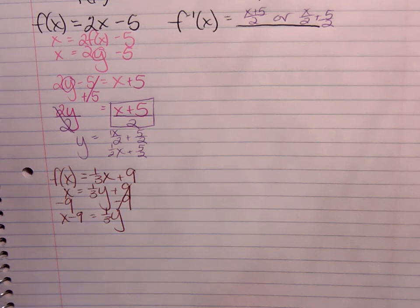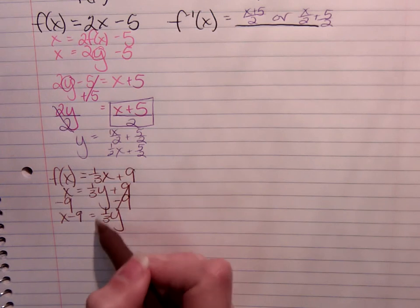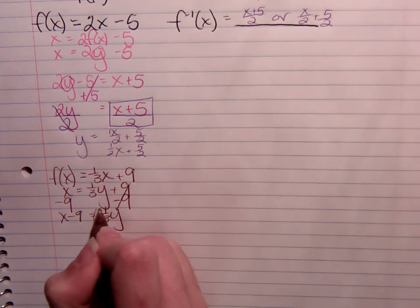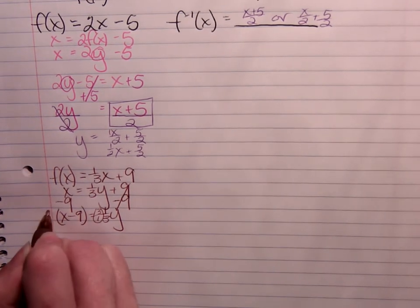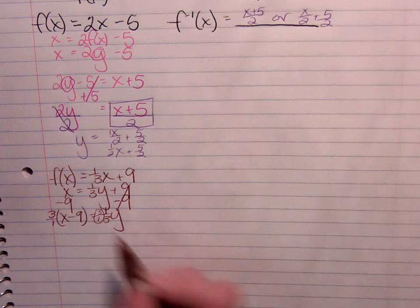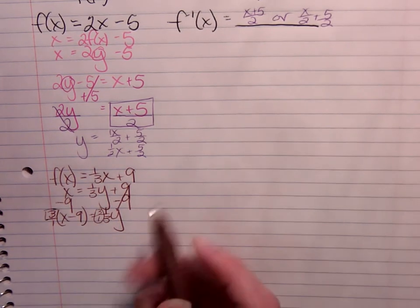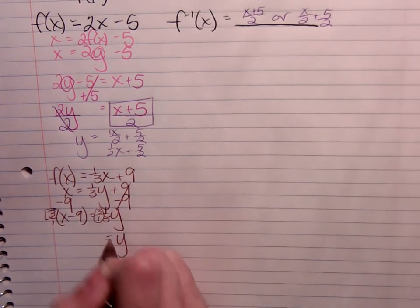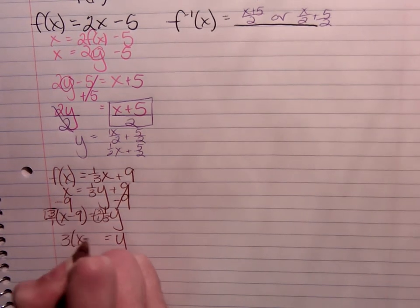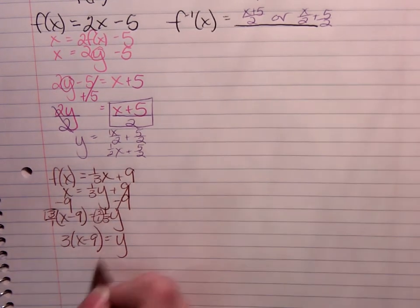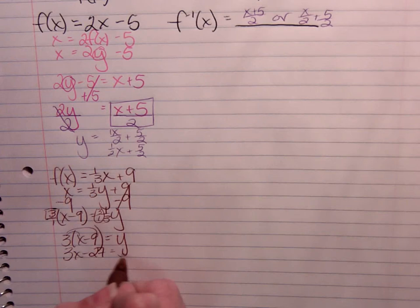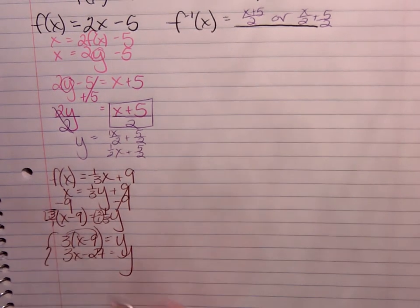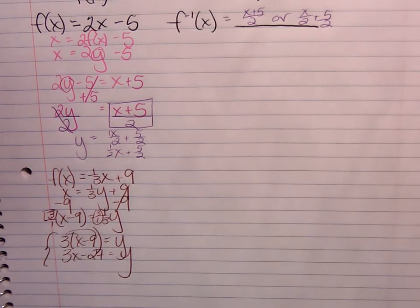We could divide by 1 third. But dividing by a fraction just makes things more complicated. Remember, another way to clear this or undo it is to multiply by the reciprocal 3 over 1. That means I multiply everything over here by 3 over 1. Which is just a nice way of writing 3. This tells me y equals 3 times x minus 9. Again, I can leave it here or distribute the 3. 3x minus 27. Either of these formats is fine. They both represent the inverse equation.